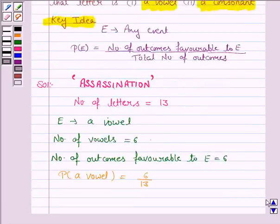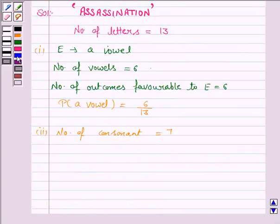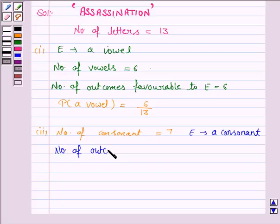Now there are 7 consonants, so the number of outcomes favorable to E is equal to 7.